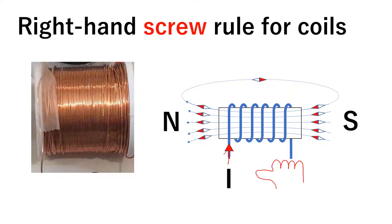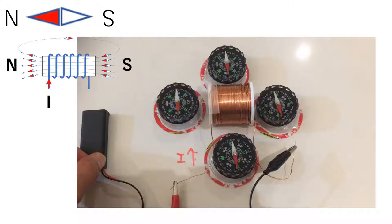When we have current in some direction, the magnetic field has a specific direction. The direction of the current shows the real magnetic field of the coil.